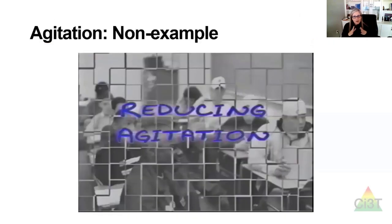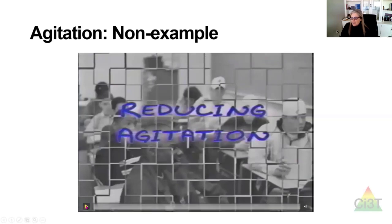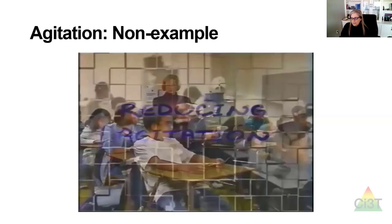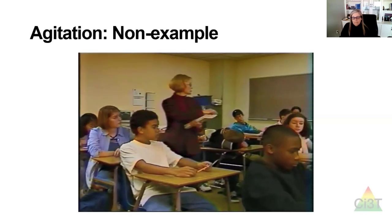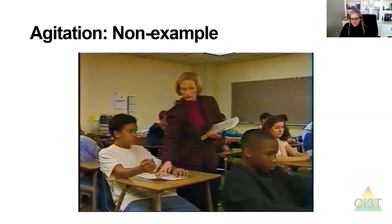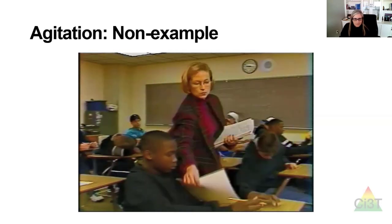Let's look at this example — actually a non-example — of a teacher responding to a student who is showing signs of agitation. In this scenario, the teacher repeatedly calls out Michael in front of the whole class, stands over him, makes ultimatums, and uses physical touch — escalating the situation rather than de-escalating it.